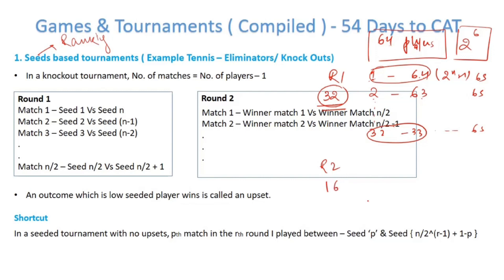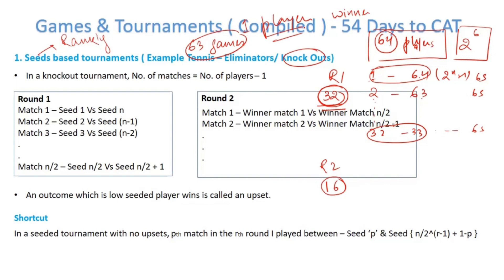With 64 players, in the end there will be 1 winner. There must be 63 games to eliminate 63 players and produce 1 winner. Always remember: the total number of games equals 2 to the power n minus 1. In this case, total players were 2 to the power 6, so total number of games is 2 to the power 6 minus 1, which is 63.